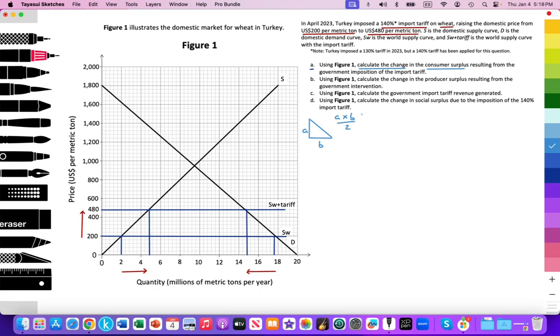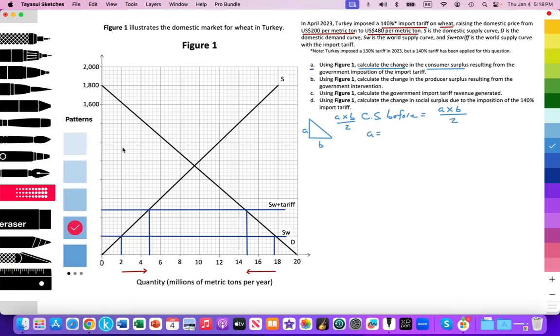Let's take a look. Calculate the change in consumer surplus. What was consumer surplus before the imposition of the tariff? That's going to be equal to the height times the base divided by 2. Let's figure out the height. Let's shade in the area so it's clear to us. We're going to follow the demand curve down to the price of 200.